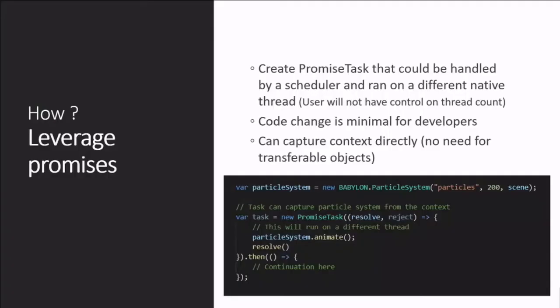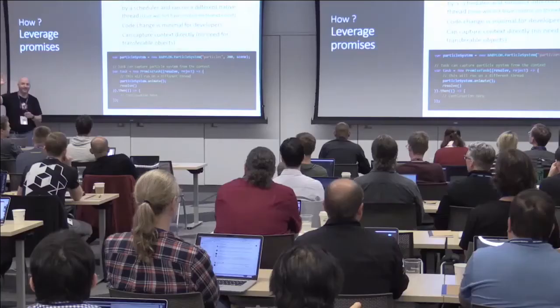So, dear Santa Claus, here is my ask. First idea: we have promises right now and they are pretty powerful. I was thinking — let's say I have my particle system here, and I could say: let's spin a new promise task that's going to capture my context. The particle system object is known by my task, it's going to be run by a scheduler, the scheduler dispatches it on a thread, does something, and then resolves back. I discussed this with the Microsoft Edge team and they gave me some interesting feedback — something like 'over my dead body' — so I felt it was not that easy to implement. There is a lot of friction from TC39 influencers.